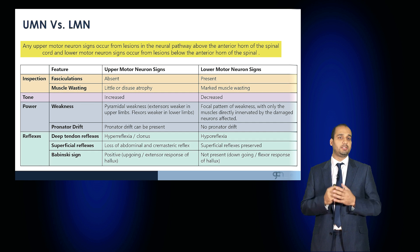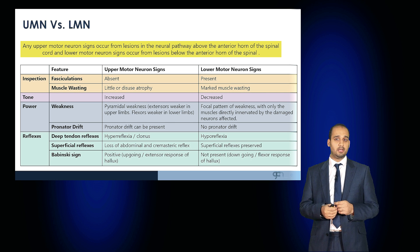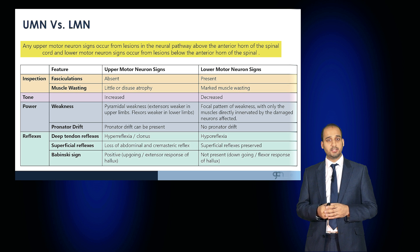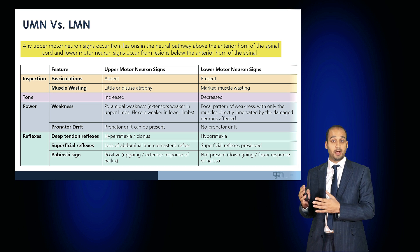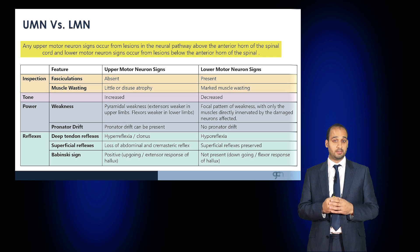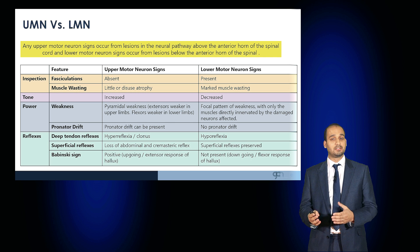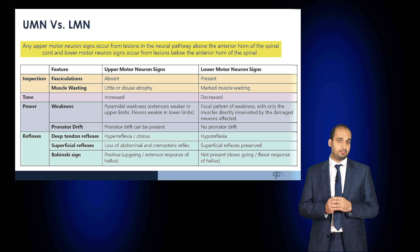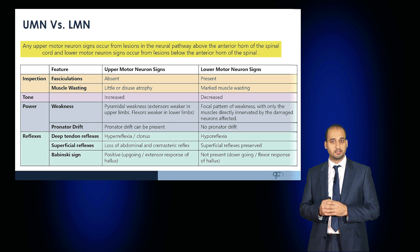On inspection, fasciculations would be present in lower motor neuron signs, as well as marked muscle wasting. There are no fasciculations seen in upper motor neuron signs, and muscle wasting is a result of disuse atrophy. The tone is increased in upper motor neuron conditions and decreased in lower motor neuron conditions.